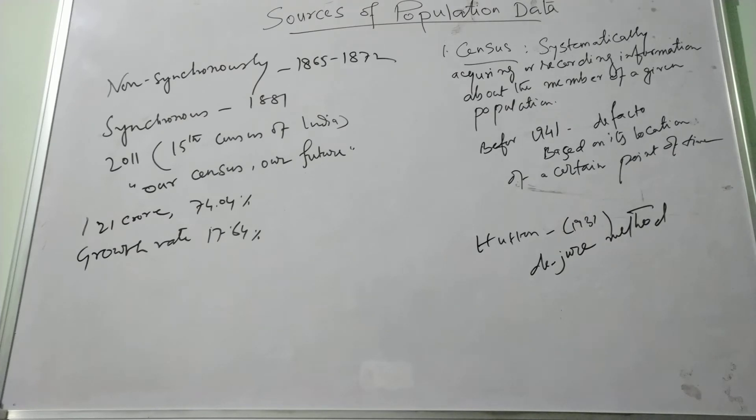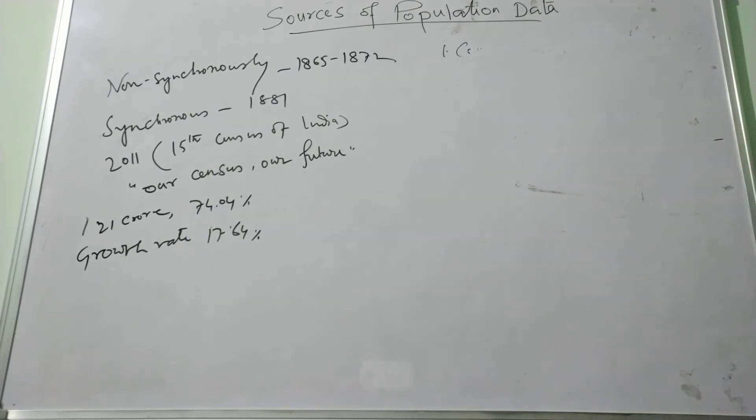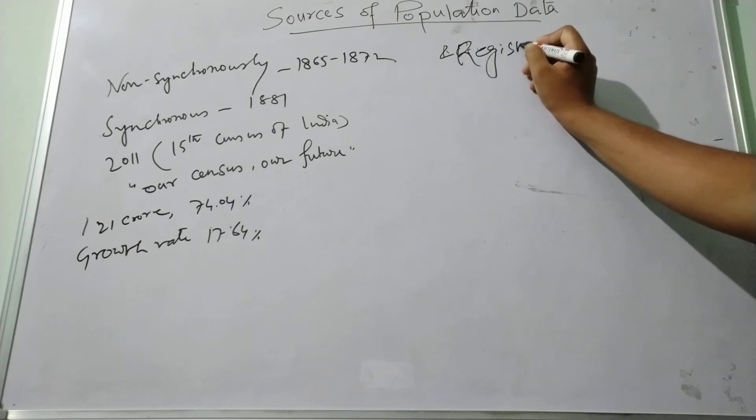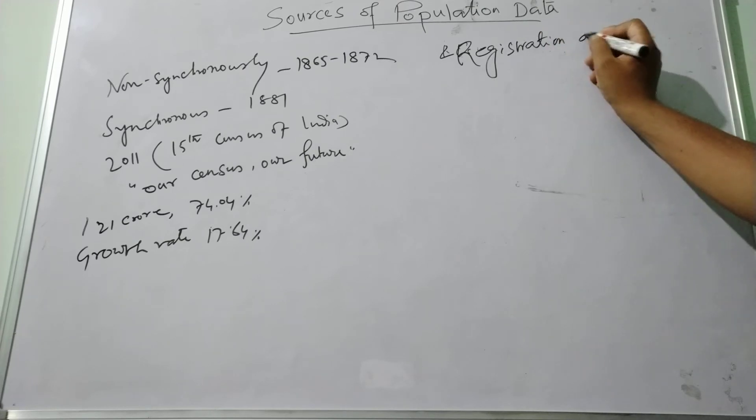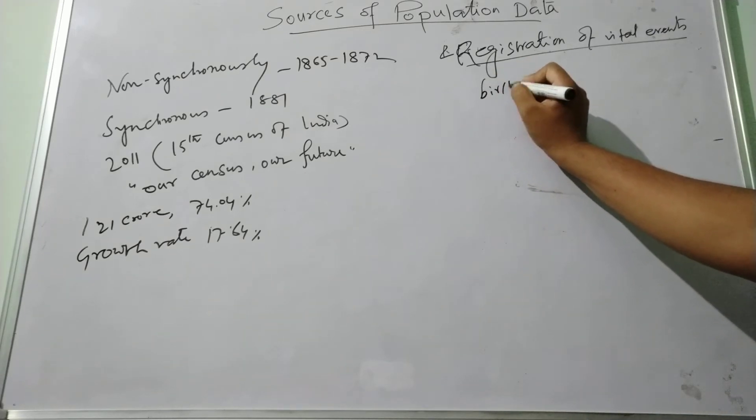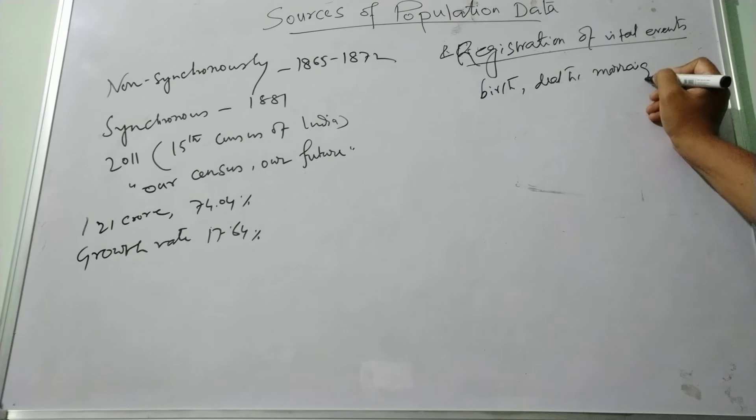Next, another important source of population data is the registration of vital events. Birth and death registration is the system that records the vital events like birth, death, and marriage of its citizens in India.